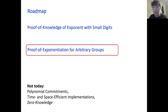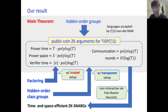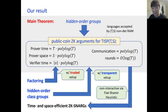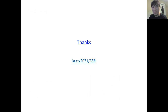That completes the section on the proof of exponentiation for arbitrary groups and brings us to the end of the talk. Our main theorem: assuming hidden order groups, we obtain public coin zero-knowledge arguments for languages accepted by a time T, space S non-deterministic RAM, where the prover time is nearly optimal, the prover space has polylogarithmic overhead with respect to the RAM, the verifier time is polylogarithmic, the communication is polylogarithmic, and the number of rounds is logarithmic. Furthermore, assuming hidden order class groups, we obtain a transparent setup, and we can make this non-interactive via Fiat-Shamir to obtain time and space efficient zero-knowledge SNARGs. Thank you very much.